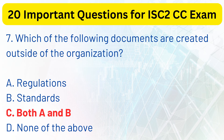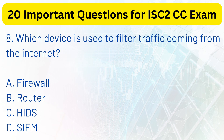Question 8. Which device is used to filter traffic coming from the internet? a. Firewall. b. Router. c. HIDS. d. SIEM. The correct answer is a. Firewall.